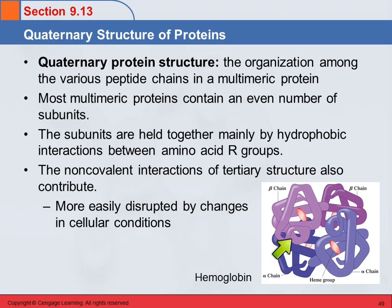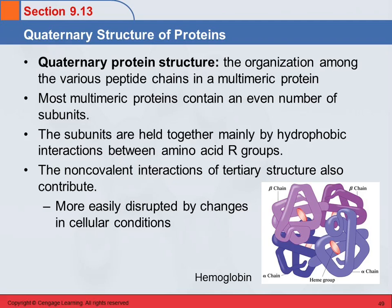The non-covalent interactions we talked about for tertiary structure also contribute to the quaternary structure, helping to hold these chains together. These chains are separate molecules — they're not covalently bonded to each other, but they are attracted to each other. They come together in the same way in all hemoglobin molecules, but those interactions are more easily disrupted by differences in cellular conditions than the secondary or tertiary structures.